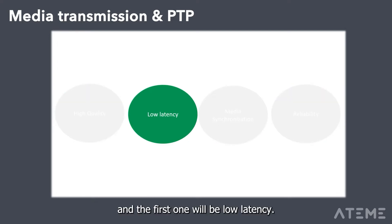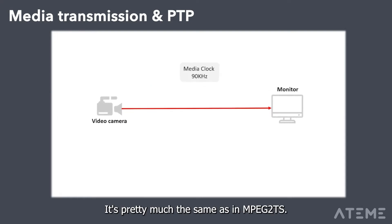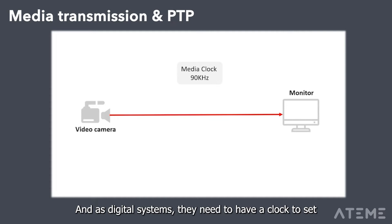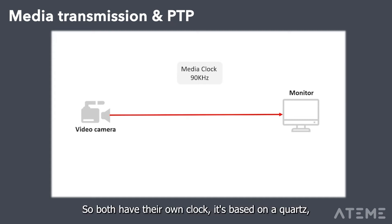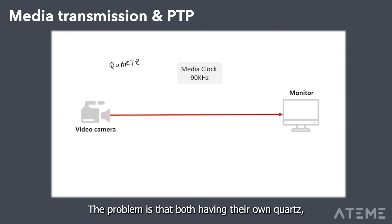The first parameter is low latency. The challenge behind low latency is pretty much the same as in MPEG-2 TS: you have two systems that are physically separated, and as digital systems they each need a clock to set the frequency of bit generation. Both have their own clock based on a quartz, and both need to operate at the same media clock — 90 kHz.